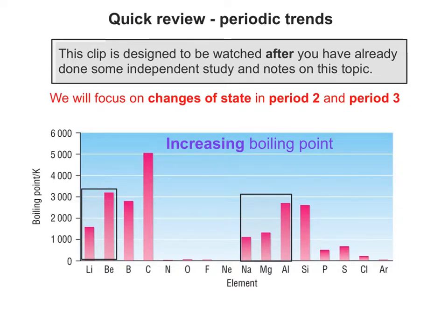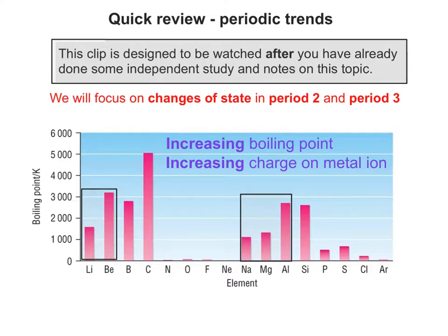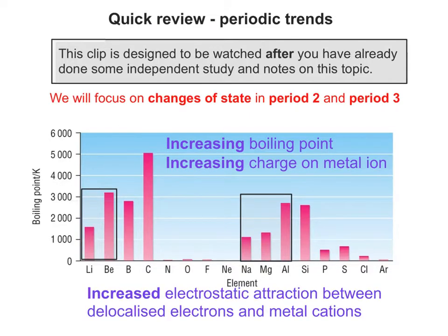Looking at the highlighted elements — lithium to beryllium and sodium, magnesium to aluminium — you can see there's an increasing boiling point. There's an increasing charge on the metal ion as you go from left to right, which gives an increased electrostatic attraction between delocalised electrons and metal cations. This structure type is called giant metallic.